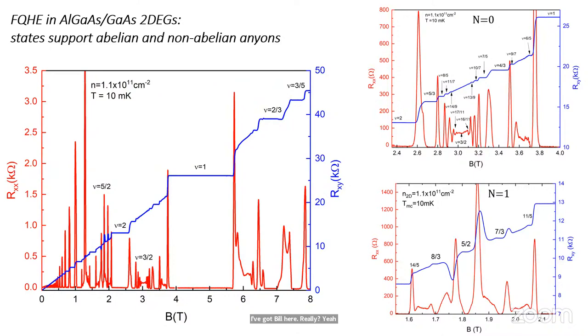But I'm going to talk about fractional quantum Hall effect in the old standard aluminum gallium arsenide-gallium arsenide. And here's why. This is magnetotransport at low temperature in the dilution refrigerator, relatively low density.